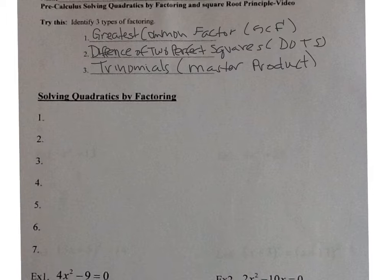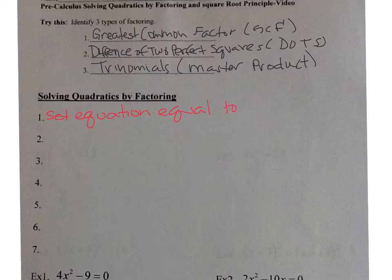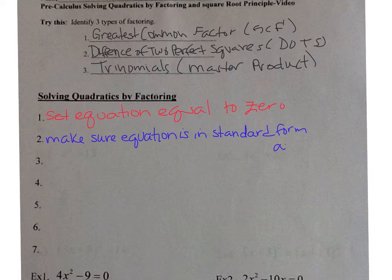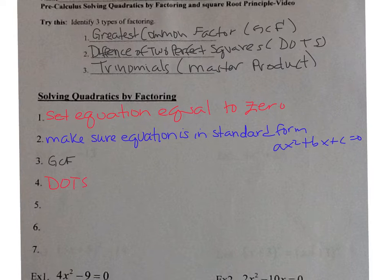We're going to solve quadratics by factoring to start off with. Always make sure the equation is set equal to zero and that your equation is in standard form. Recall, standard form is ax squared plus bx plus c equals zero. You're going to look for factoring in this order: look for the GCF first. If you don't see the GCF, look for DOTS next. And then after that, do trinomials.